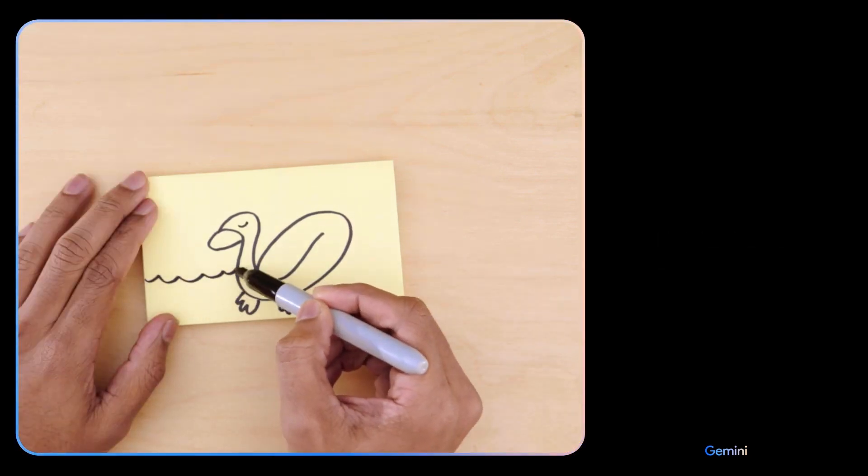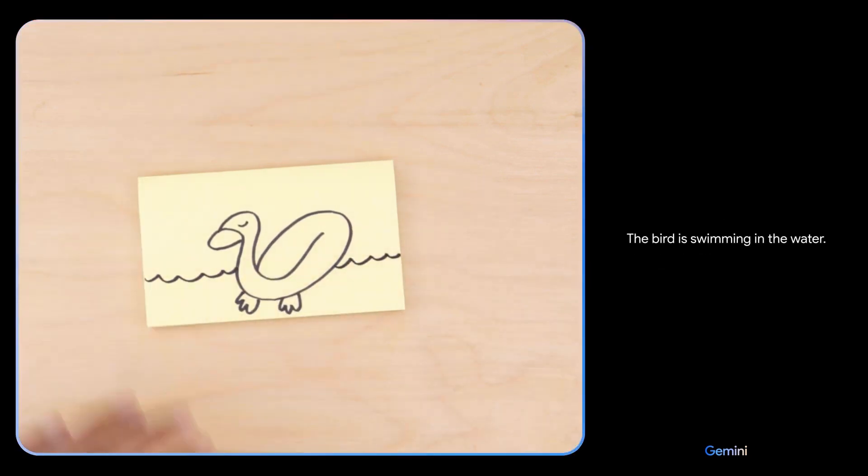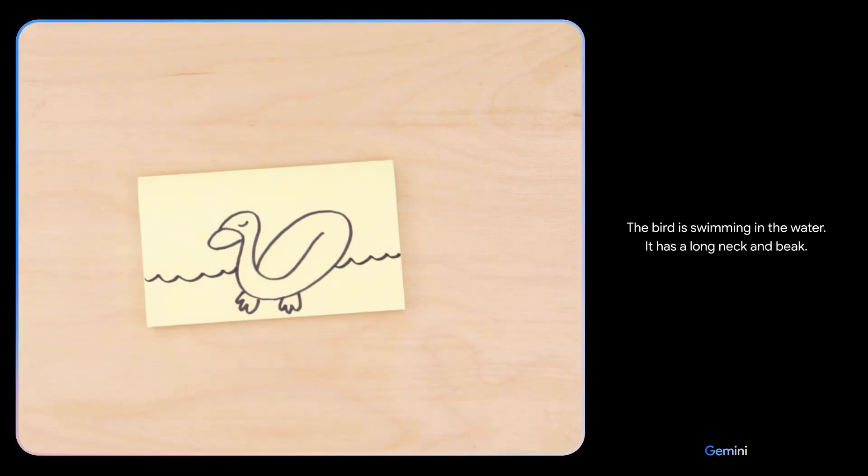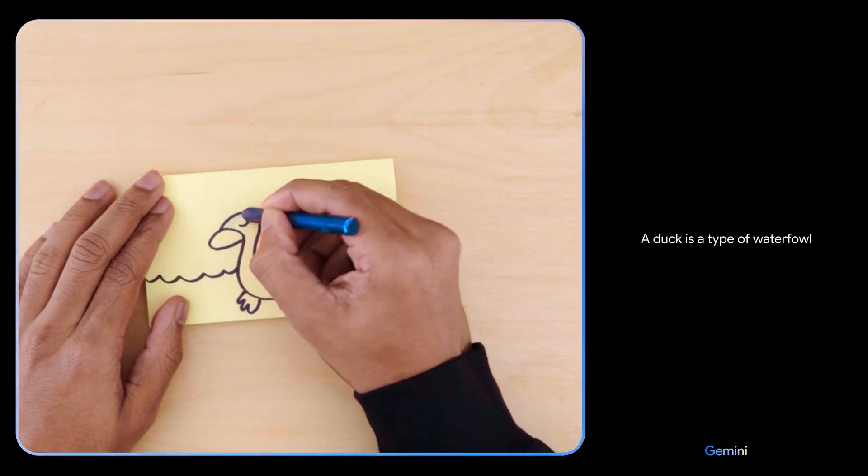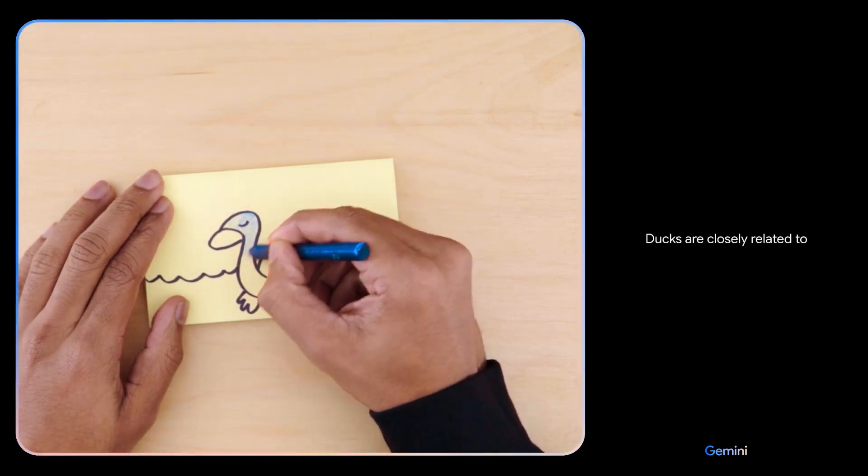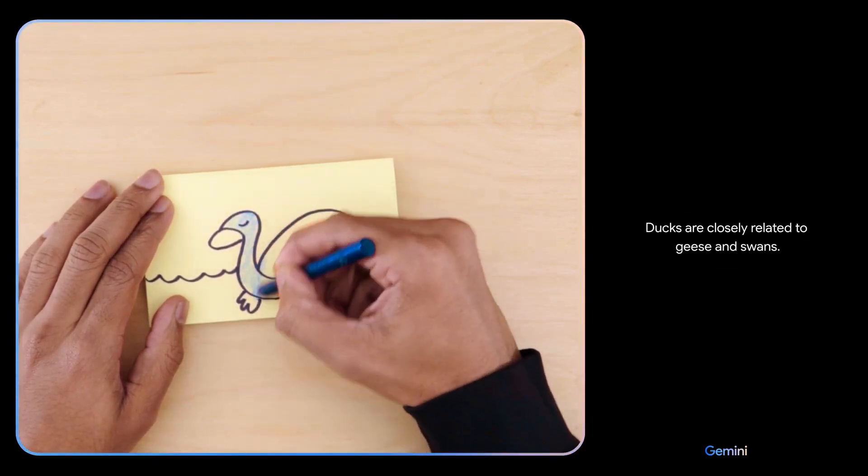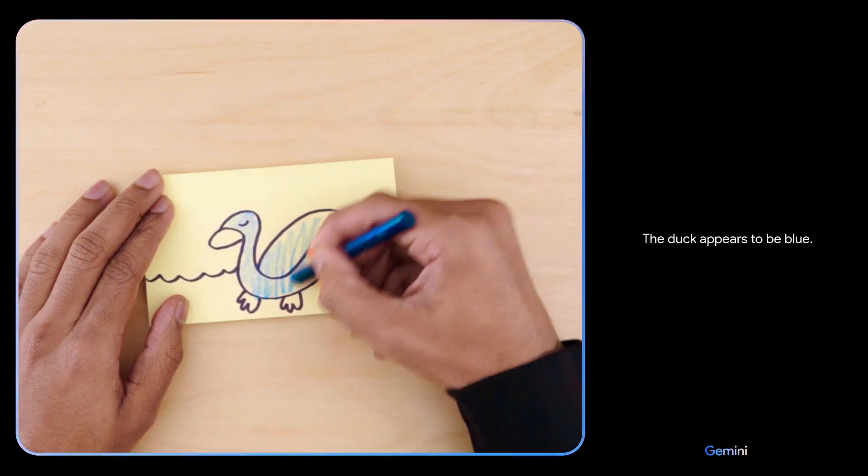What if I add this? The bird is swimming in the water. It has a long neck and beak. It is a duck. Yes, a duck is a type of waterfowl in the family Anatidae. Ducks are closely related to geese and swans.